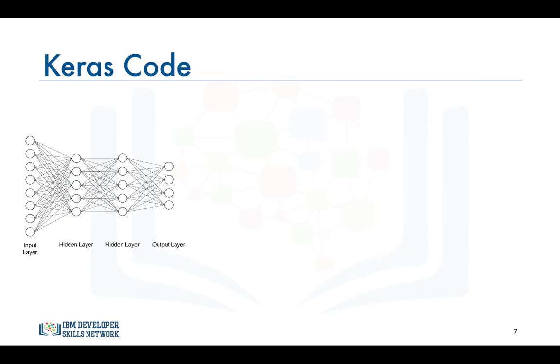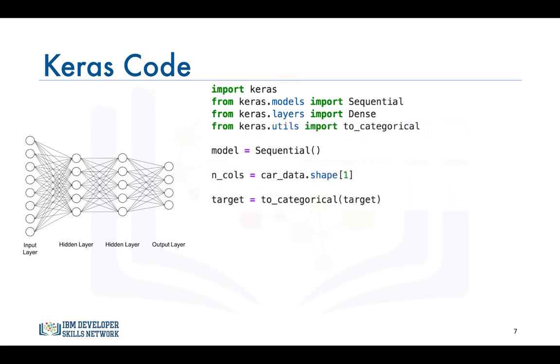In terms of code the structure of our code is pretty similar to the one we use to build the model for a regression problem. We start by importing the Keras library and the Sequential model and we use it to construct our model. We also import the Dense layer since we will be using it to build our network. The additional import statement here is the to_categorical function in order to transform our target column into an array of binary numbers for classification.